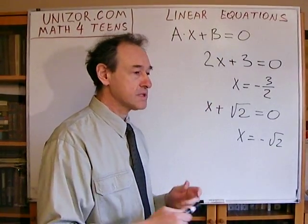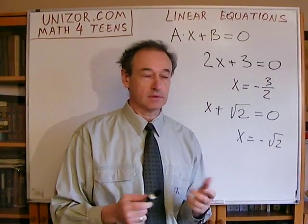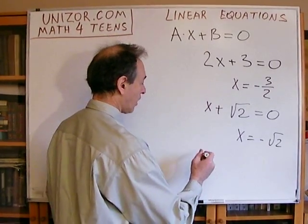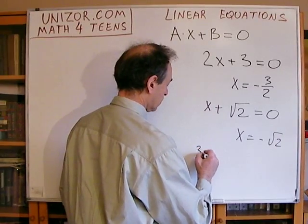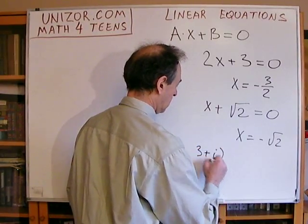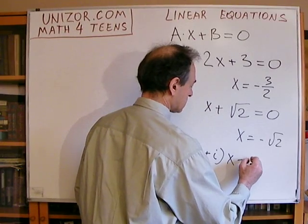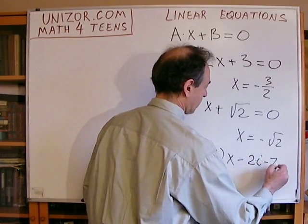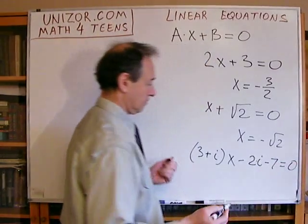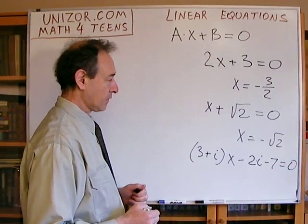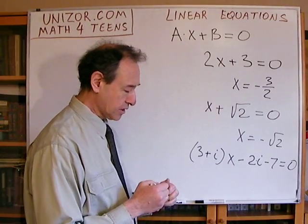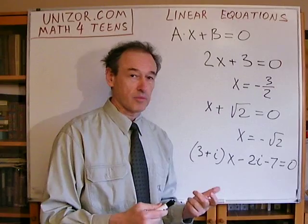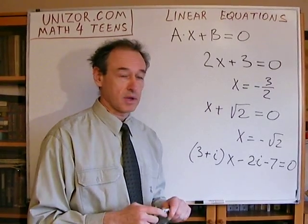And obviously the same can be said about complex numbers. If I'm looking for a solution to (3 + i)x − 2i − 7 = 0, the solution to this equation does not exist in the domain of real numbers, but it does exist in the domain of complex numbers.